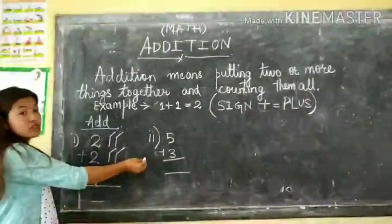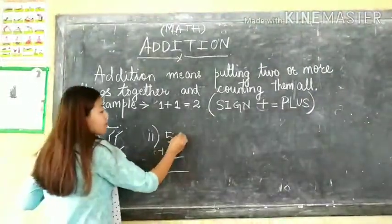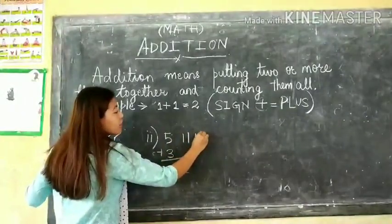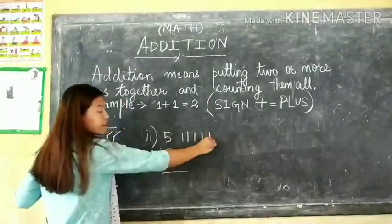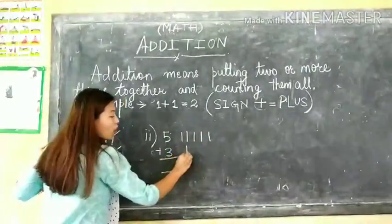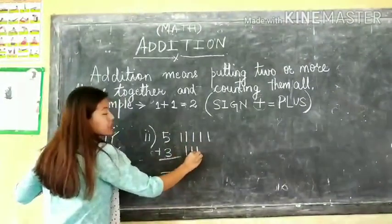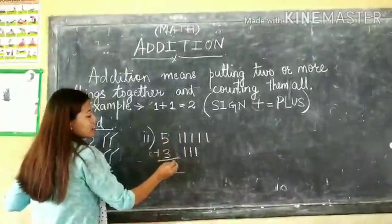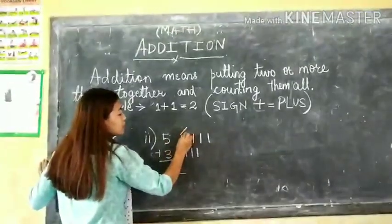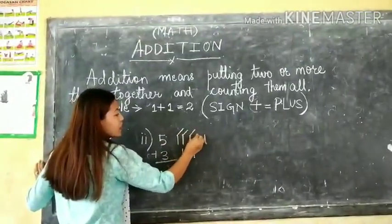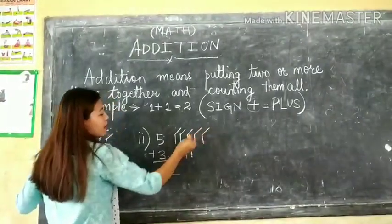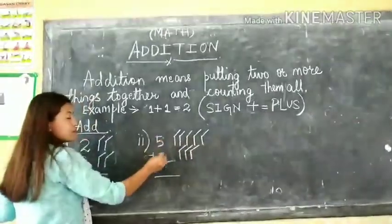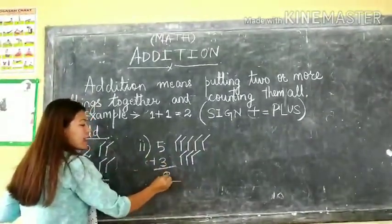Let's do the next one. 5: 1, 2, 3, 4, 5. And this is 3: 1, 2, 3. Here also we need to count the numbers together to get the answer. 1, 2, 3, 4, 5, 6, 7, 8. So 5 plus 3 is 8.